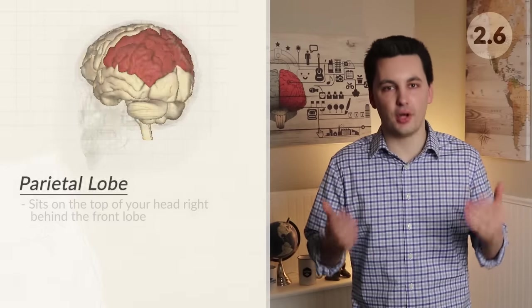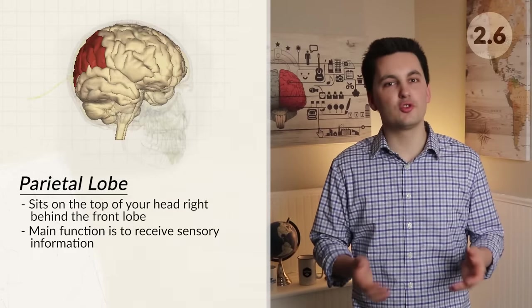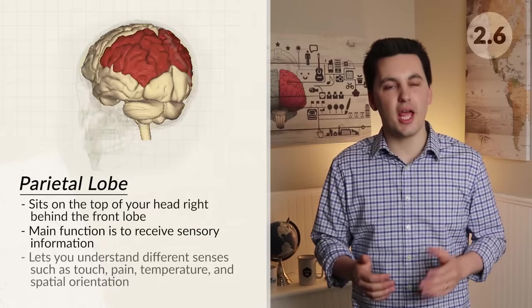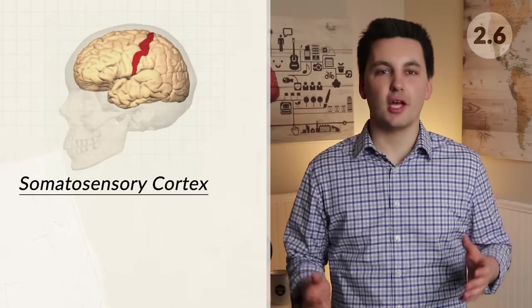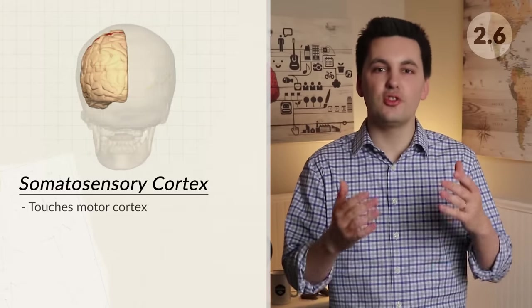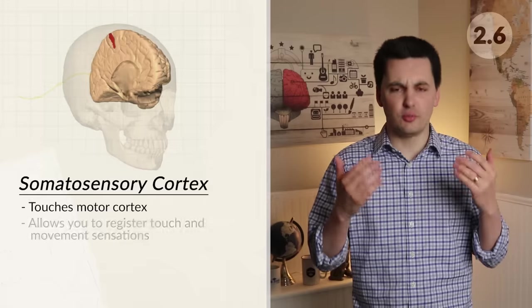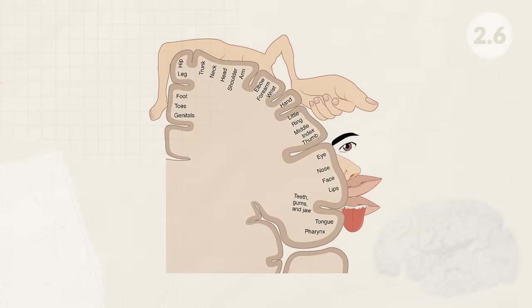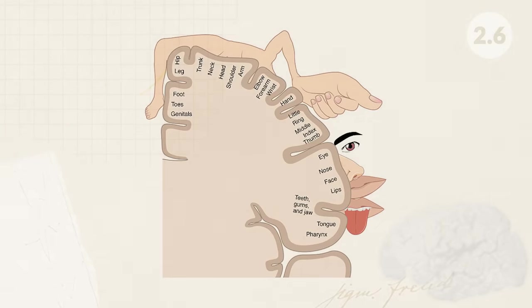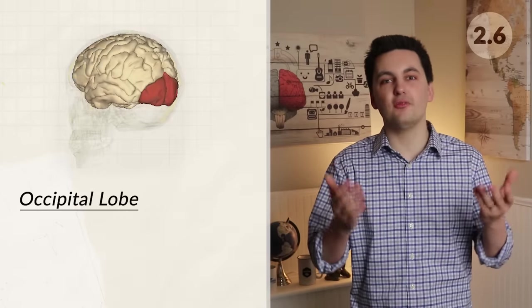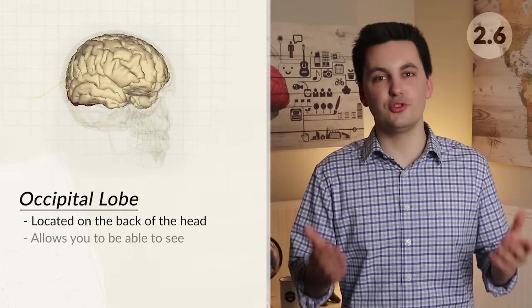The parietal lobe sits on top of your head right behind the frontal lobe. Its main function is to receive sensory information — this is what lets you understand different sensations such as touch, pain, temperature, and spatial orientation. The somatosensory cortex is parallel to and touches the motor cortex, allowing you to register touch and movement sensations as well. The left sensory cortex controls sensations for the right side of your body while the right sensory cortex controls sensations for the left part of your body. We can visualize the amount of brain area dedicated to specific body parts by looking at the sensory homunculus. Moving to the back of our head, we have the occipital lobe and the visual cortex, which is what allows you to see.